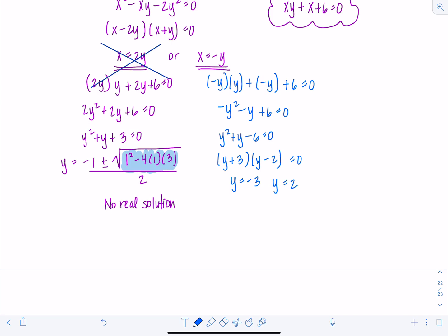And remember, x is equal to negative y. So that means if y is negative three, x is three. And if y is two, x is negative two. So those are our only two solutions. Three, negative three, and negative two, two.